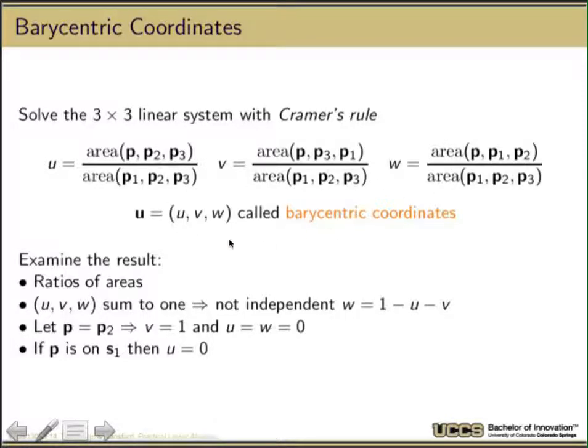Some nice properties: these are ratios of areas, so what happens on an affine transformation? They'll be preserved. They sum to one. They're not independent. Clearly, given U and V, I can define W. It's 1 minus U minus V.